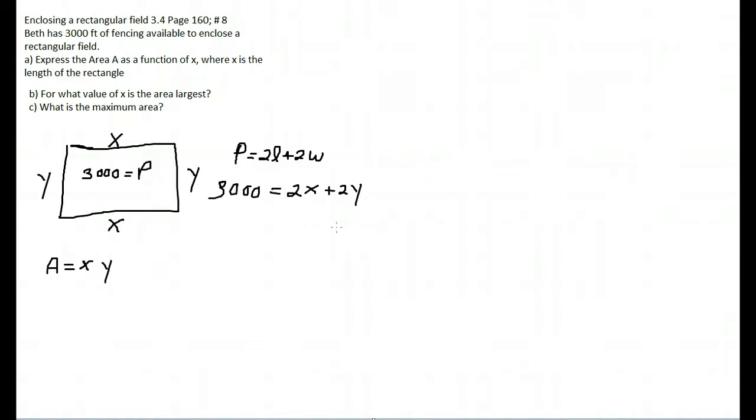If we take this and we solve for Y, that means I subtract 2X from each side, so I have 3,000 minus 2X equals 2Y. Then divide by 2 everything, we get 1,500 minus X is what Y equals.